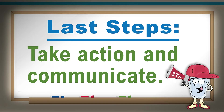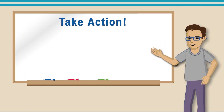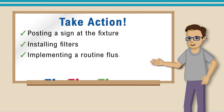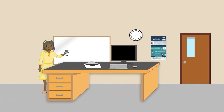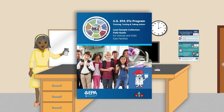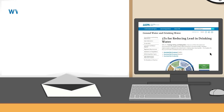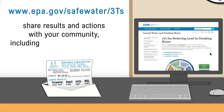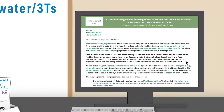The last steps are to take action and communicate. If lead is detected in your samples, EPA recommends taking action, which may include posting a sign at the fixture to inform that lead was found, installing filters, implementing routine flushing, or removing or replacing the fixtures. You should also reach out to your public water system and use the EPA 3Ts Lead Sampling Field Guide to help determine your short-term and long-term actions to reduce lead levels. When you receive your results, share them with your community, including parents, students, staff, and anyone else that might use the building. Use the customizable EPA 3Ts letter template to share results and actions with your community.